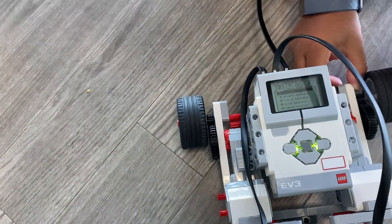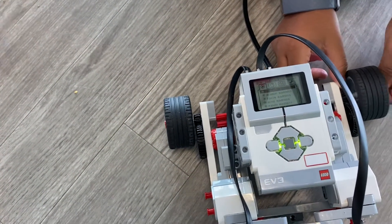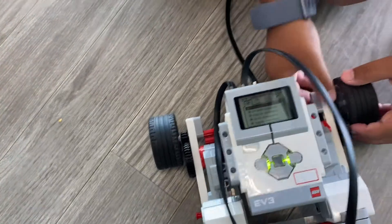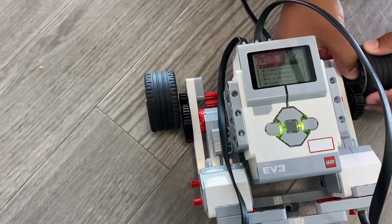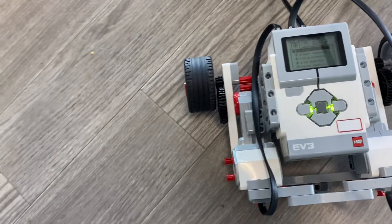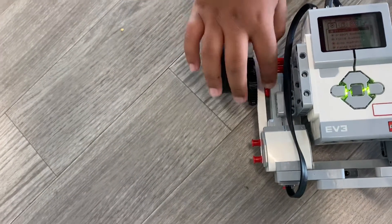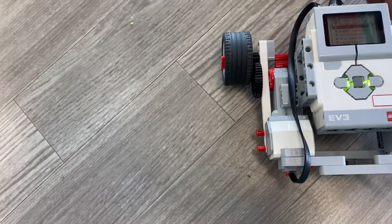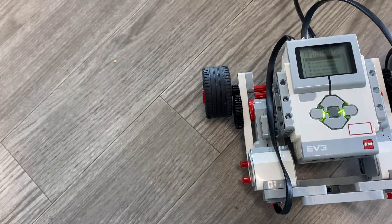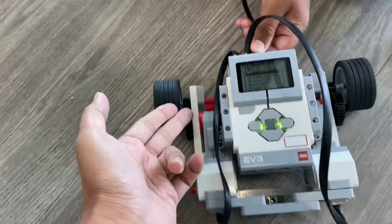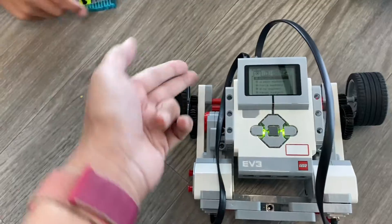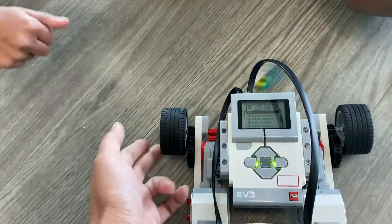Is it increasing the speed or decreasing the speed, the whole gearing system that we have here? Increasing. Why? Because the big gear is the one that's connected to the engine and it's controlling. And also the big gear is a driver and the small gear is the follower, so it has to spin less for it to move.